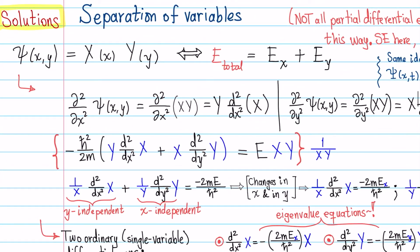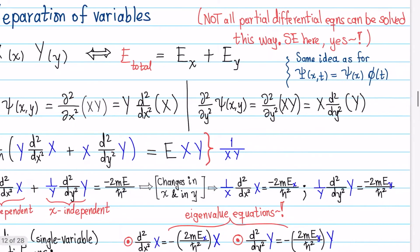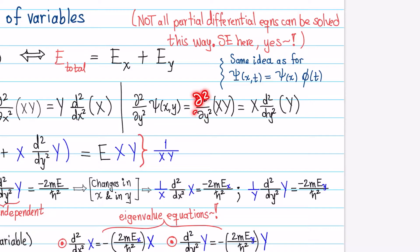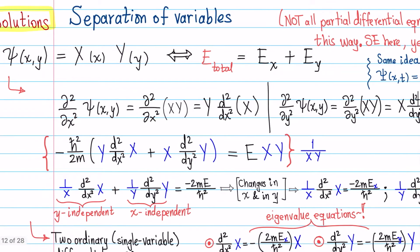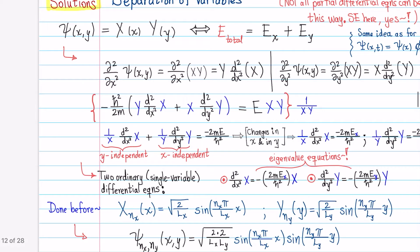If we can express the wave function as the product of two functions that only depend on their individual variables, then when I take the second derivative with respect to x of this product, y should be a constant, so I can take it out of the differentiation, and I'm going to take the second derivative only of the function that depends on x. Similarly, when I apply the second derivative with respect to y of this product of functions, x is a constant, so it can be taken out of differentiation, and the derivative is just going to be with respect to the variable that contains y. Then my Schrödinger equation, using this fact, can be rewritten in the following fashion.